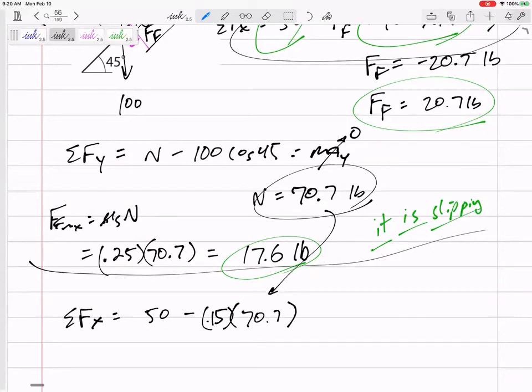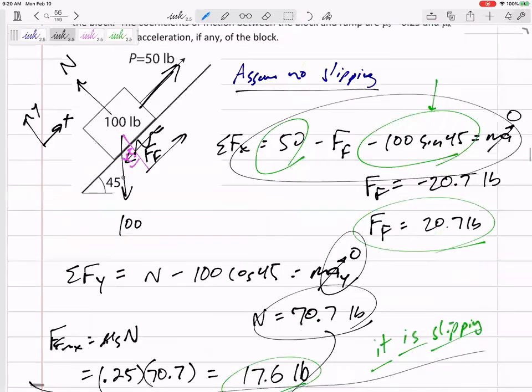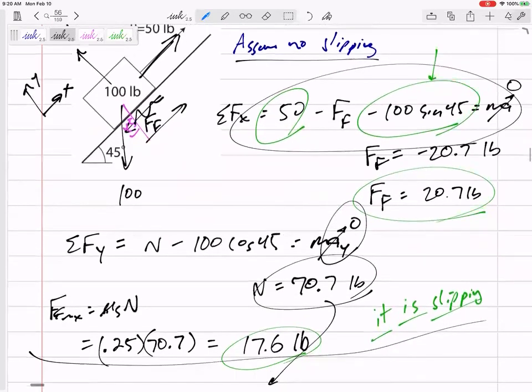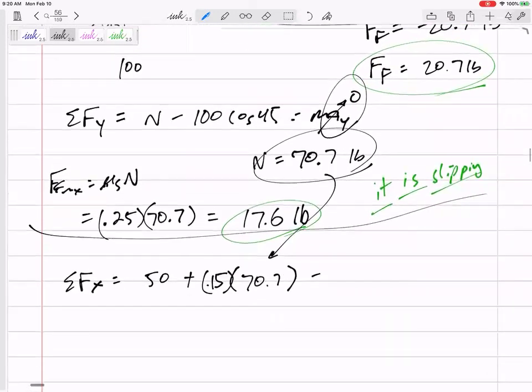And double check, but I think that N would stay the same. That Y equation would stay the same. It is still, even though it is slipping, it's still not in the Y direction. I could rewrite the Y equation, but the Y equation would still give me an N of 70.7. Oh sorry, I know it is going up the incline.